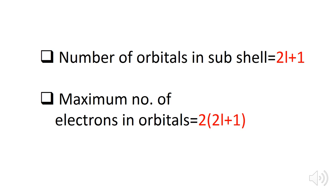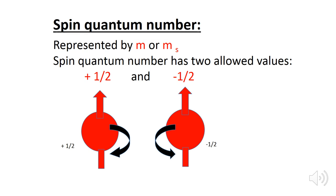The number of orbitals in any subshell can be calculated using the formula 2l + 1, and the maximum number of electrons in the orbitals can be found using the formula 2(2l + 1). The fourth quantum number is the spin quantum number — it gives the direction of the spinning of the electron around its own axis. The spinning of an electron may be clockwise or anti-clockwise.